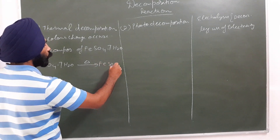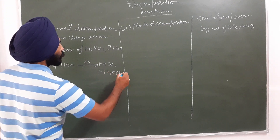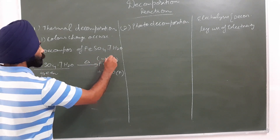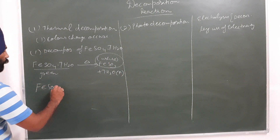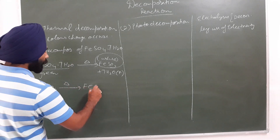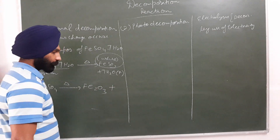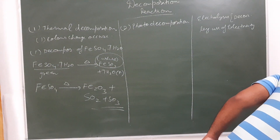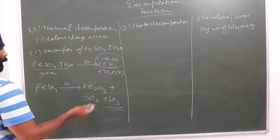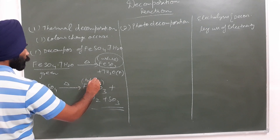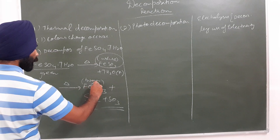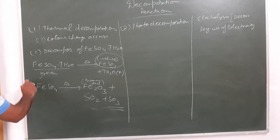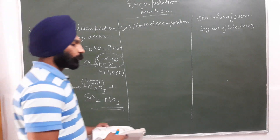When we heat ferrous sulfate FeSO4·7H2O, the water gets evaporated first. This compound is green in color; when the water leaves, it becomes white colored FeSO4. When this white compound is heated again, we get Fe2O3 plus SO2 plus SO3. This is the balanced equation — ferric oxide (brown-red), sulfur dioxide, and sulfur trioxide are the products.